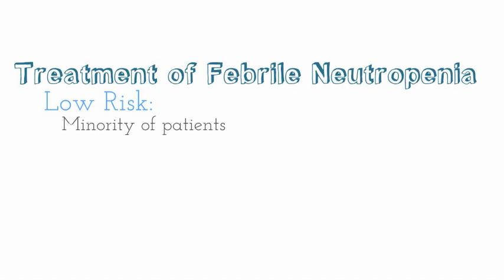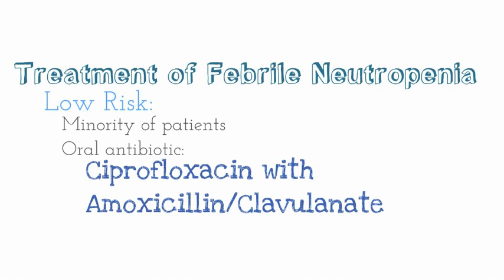How do you treat febrile neutropenia? It really depends on whether the patient is low risk or high risk. Low-risk patients are the minority and are rarely seen in the hospital — you can treat them with oral antibiotics. You could start with ciprofloxacin, which covers pseudomonas, along with amoxicillin-clavulanate. This combination is generally used for outpatients with a low risk of prolonged febrile neutropenia.